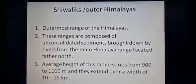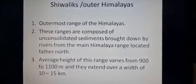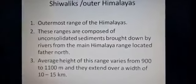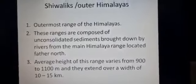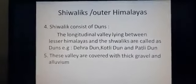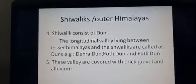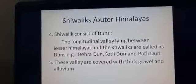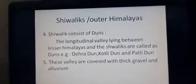Now we'll talk about Shivalik — the outermost range of the Himalayas, the lowest one. It is made of sedimentary material brought by rivers from the main Himalayan range. The average height ranges from 900 to 1100 meters and they extend over a width of 10 to 15 kilometers. Shivalik consists of many duns — broad valleys between the Himachal range and the Shivalik ranges, also described as longitudinal valleys lying between the Lesser Himalayas and the Shivalik. Examples include Dehradun and Patli Dun. These valleys are covered with gravels and alluvials.